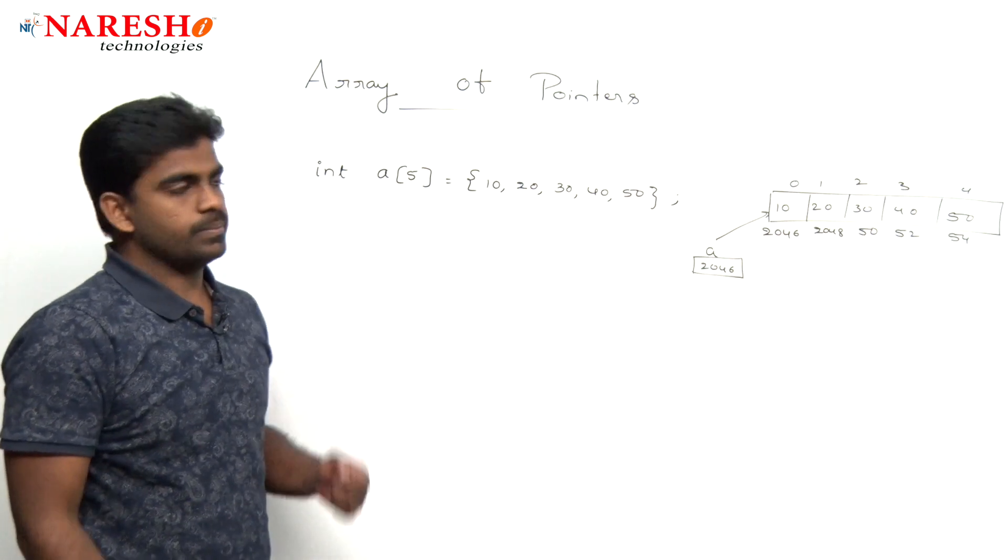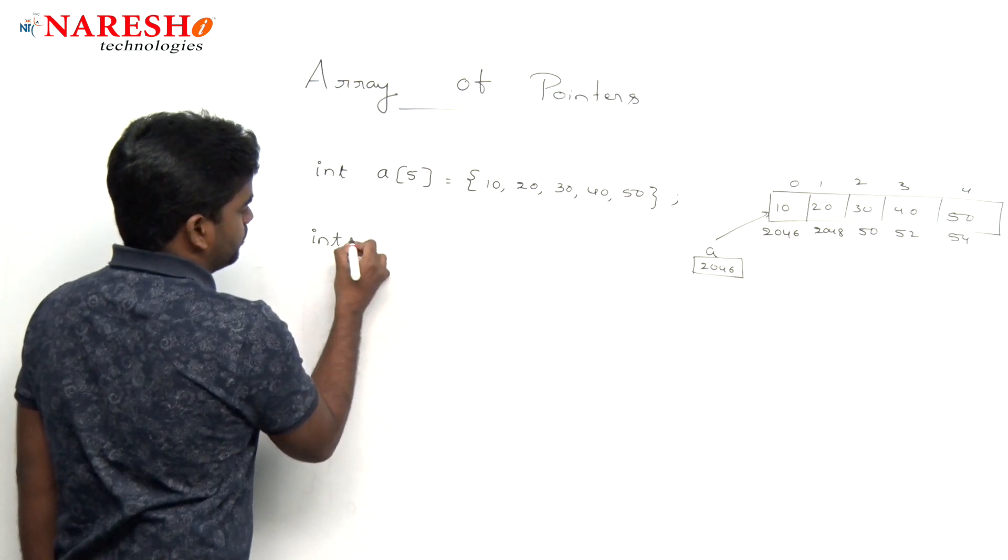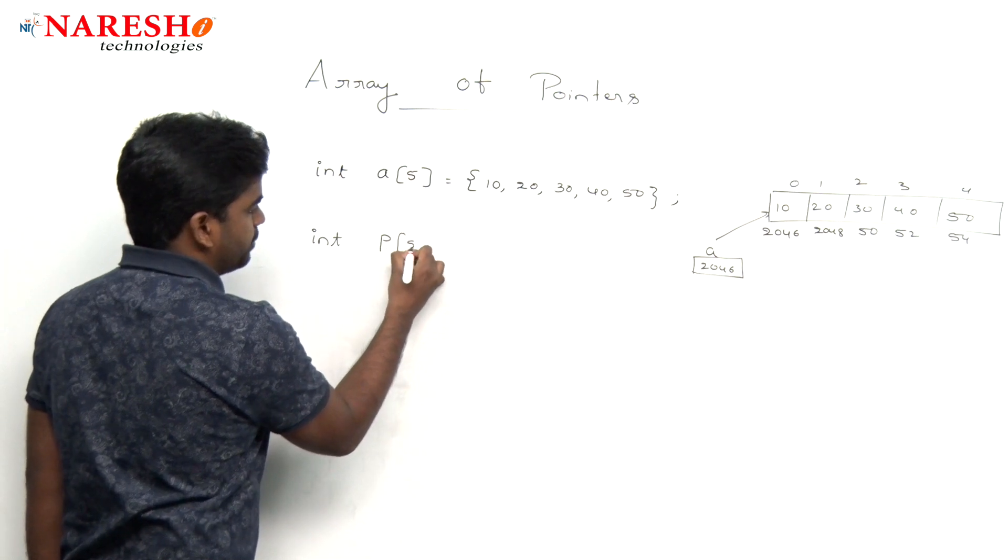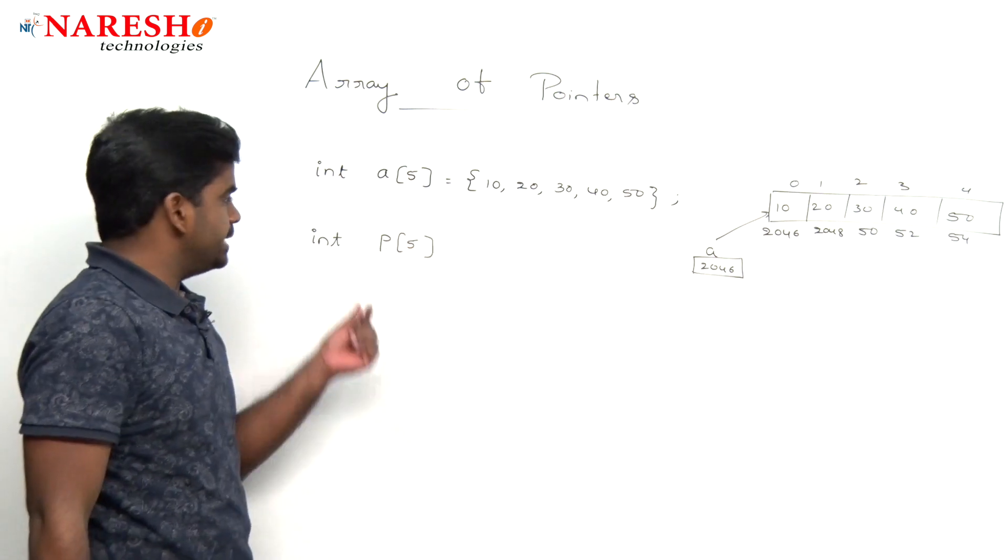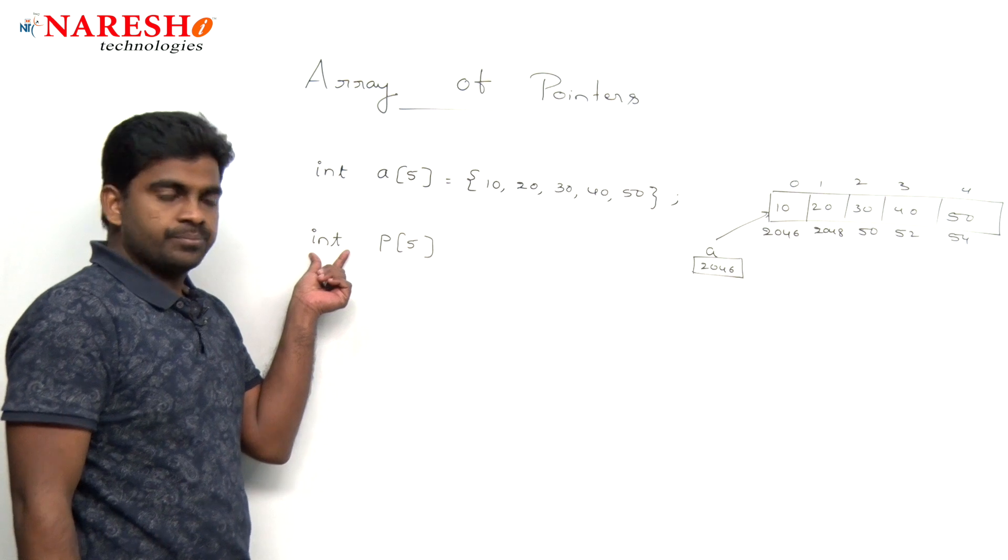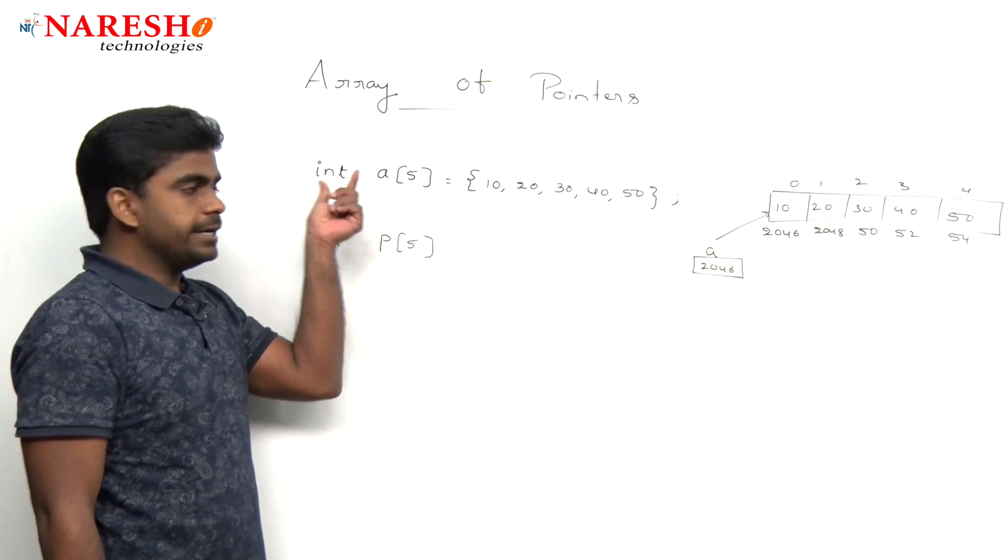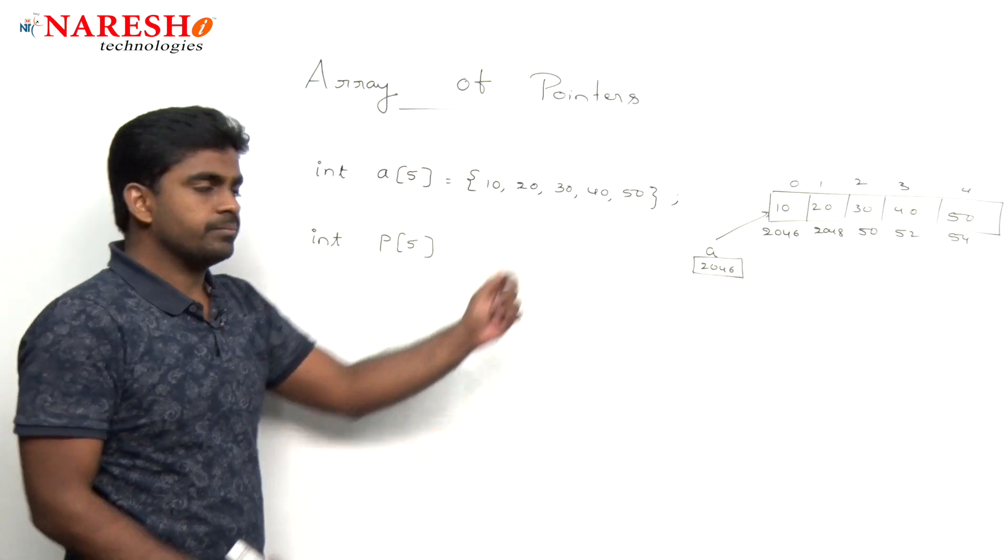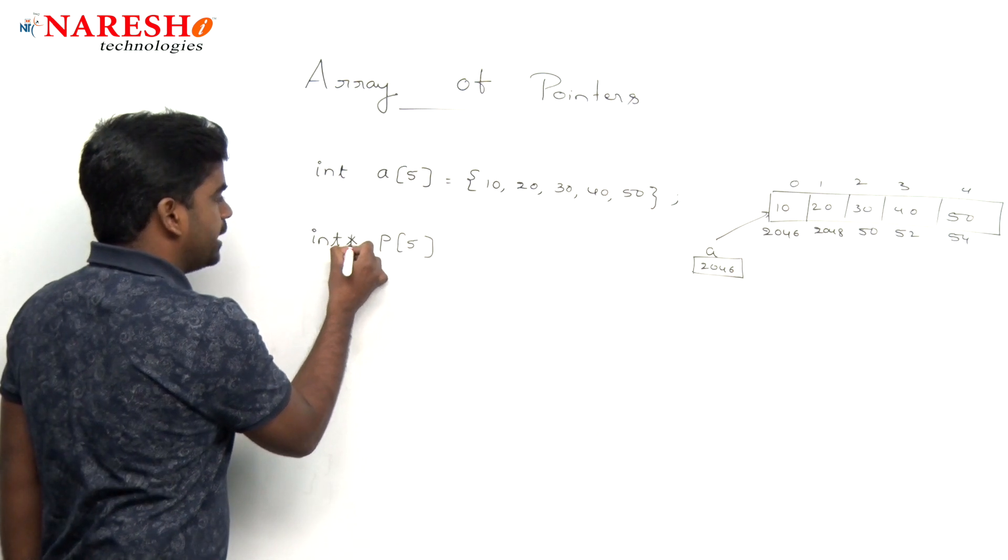Now, we are declaring one array p, size is five. It is not integer type. If it is an integer type, it holds integer data. It is integer pointer type.